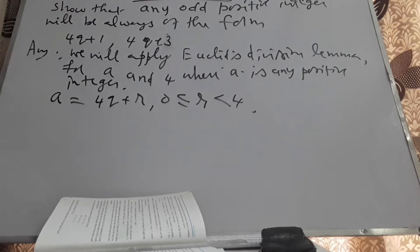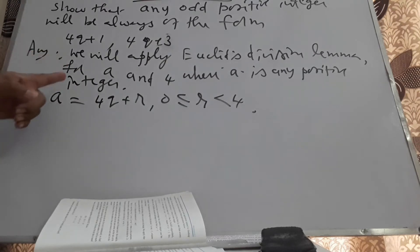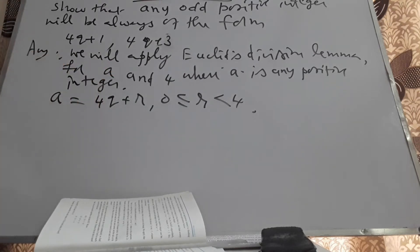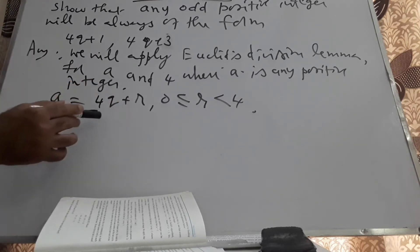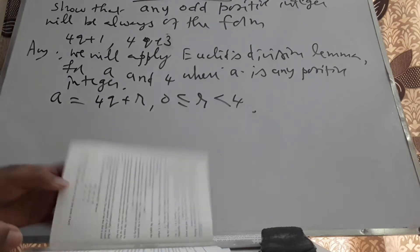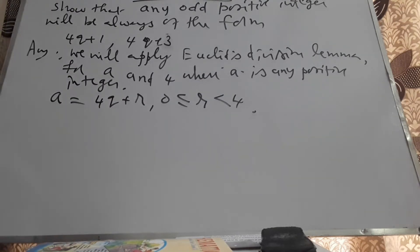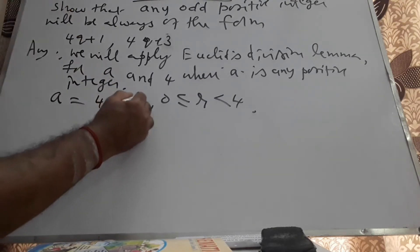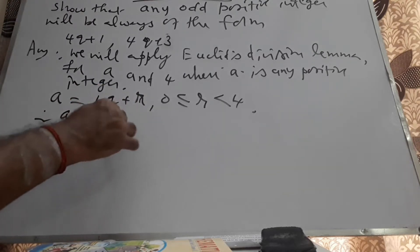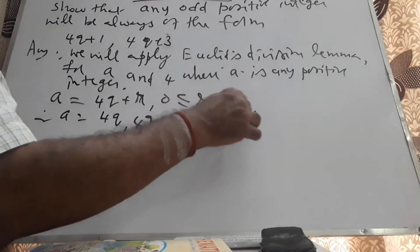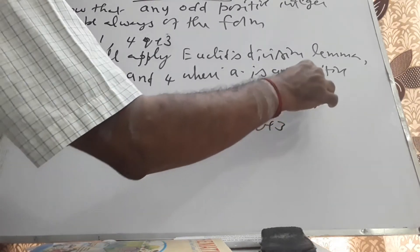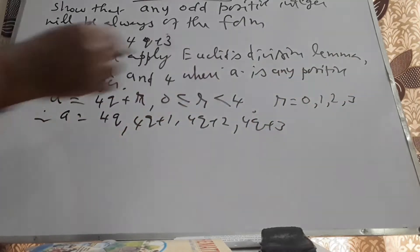I am applying Euclid's division lemma for two positive integers A and 4. A can be written in the form 4Q+R, where R lies between 0 and 4. Therefore A will be either 4Q, or 4Q+1, or 4Q+2, or 4Q+3 — here R will be 0, 1, 2, or 3. It won't take the value 4.